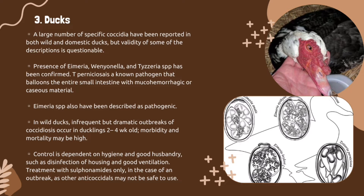Next are ducks. A large number of specific coccidia have been reported in both wild and domestic ducks, but the validity of some descriptions is questionable. Presence of Eimeria, Wenyonella, and Tyzzeria species has been confirmed. Tyzzeria perniciosa is a known pathogen that fills the entire small intestine with muco-hemorrhagic or caseous material. Some species of coccidia in domestic ducks are considered relatively non-pathogenic.